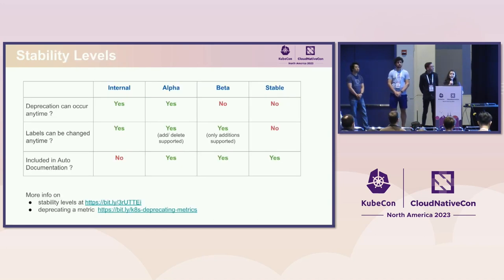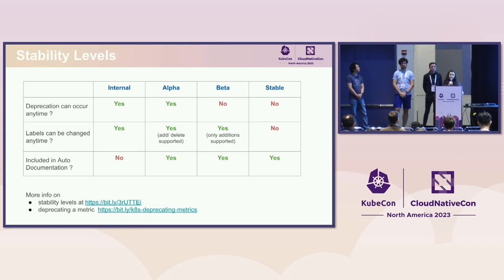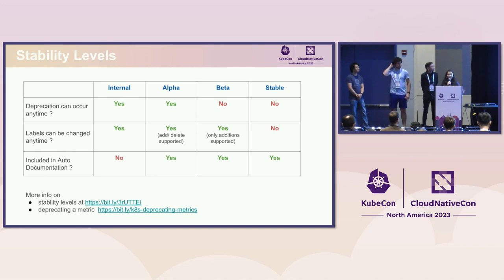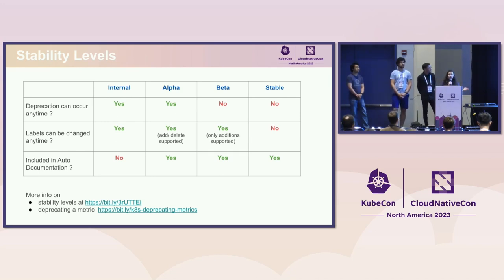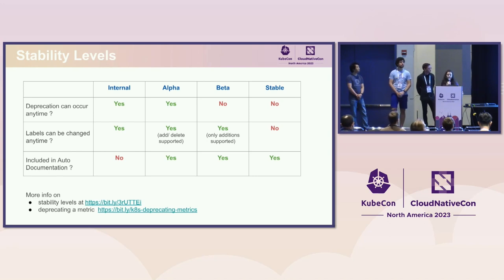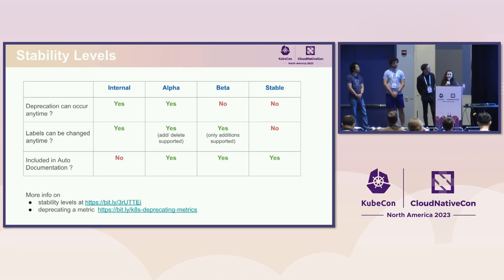Stability for Kubernetes metrics is currently expressed in the form of stability levels or classes. Right now we have four classes. Initially we started with just alpha metrics and stable metrics. Alpha metrics can change anytime — they have no stability guarantees. But stable metrics cannot change arbitrarily; they have well-defined stability guarantees. For example, if you want to deprecate a stable metric, you have to provide a public announcement and the metric is supported for a specific period of time after deprecation. We realized going from no stability guarantees to suddenly making a metric immutable was too much of a change, so we introduced two more levels.